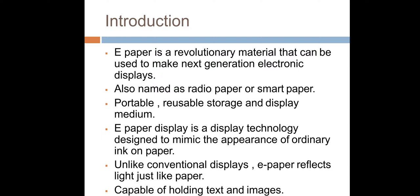So e-paper is a revolutionary material that can be used to make next generation electronic display. It is just a technology designed to mimic the appearance of ordinary ink on paper. Unlike conventional displays, e-paper reflects light just like paper.